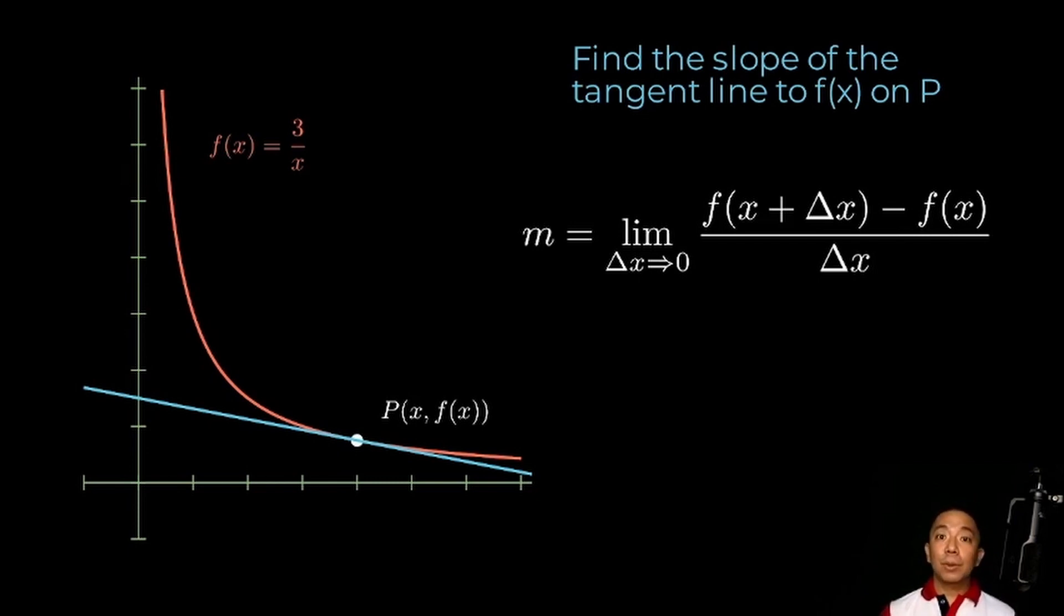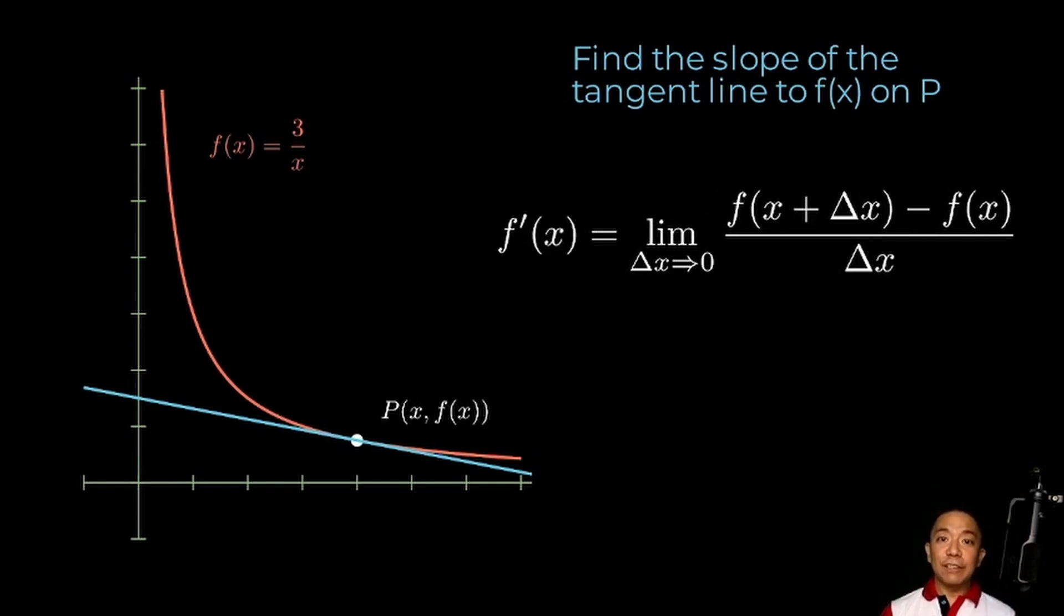You might remember from your discussion sa math 5 that this will give you the derivative of function f. So, yung expression natin na limit as delta x approaches zero of f of x plus delta x minus f of x all over delta x is the limit of the difference quotient. And this is the definition of the derivative of f.